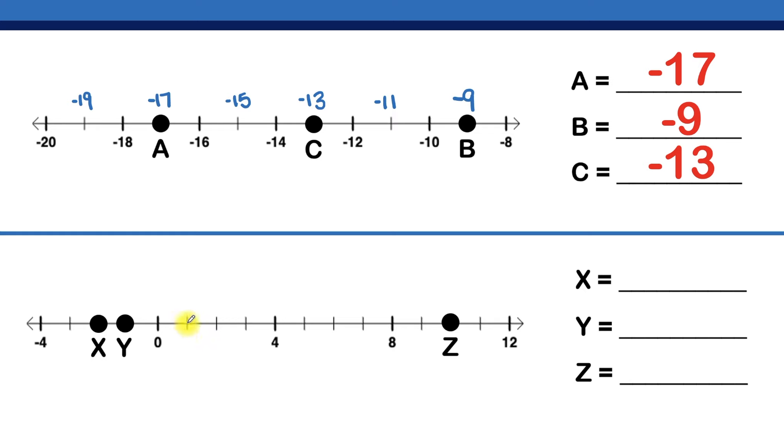So that means this mark here is positive one, because remember, the positive numbers count away from zero to the right. So we've got one, two, three, four,